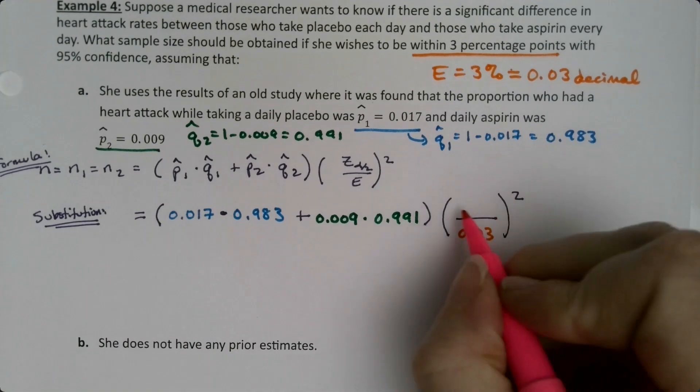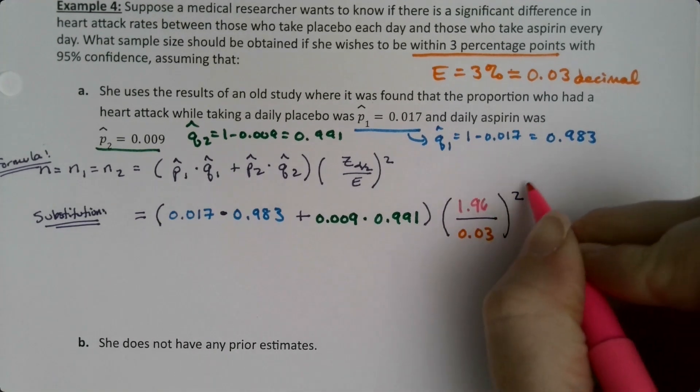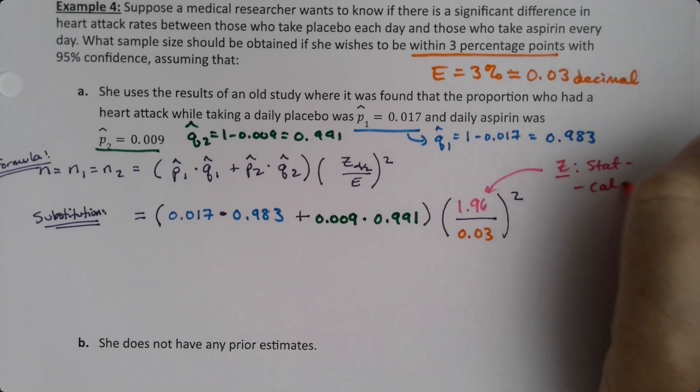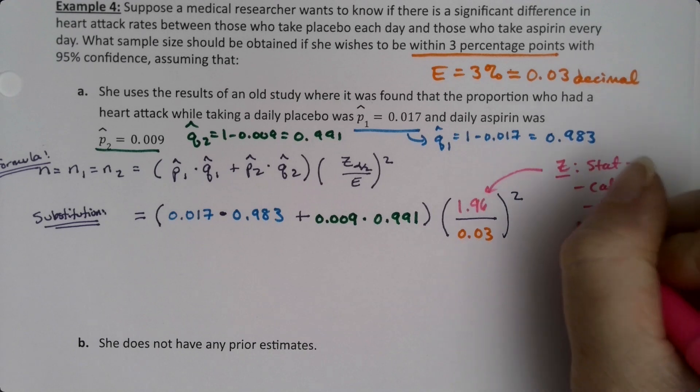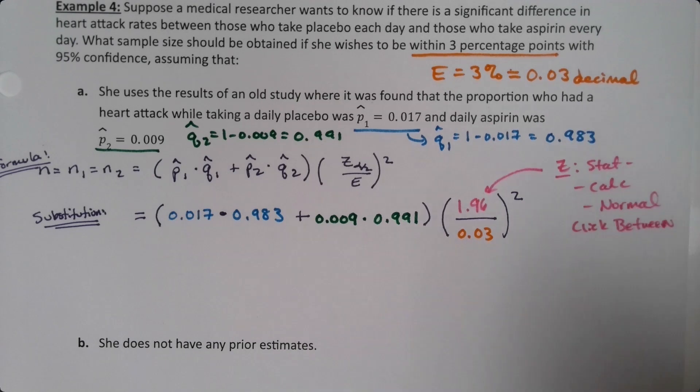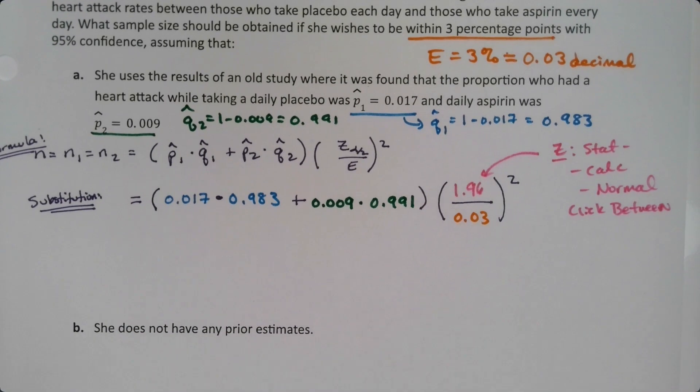Okay, so we better make notes to ourselves. So to get the Z, I'm going to write 1.96. To get that Z, it's calculators normal. Click between. That's the big mistake a lot of students make. They forget to click between. Alright, so make sure you click between to make it work.